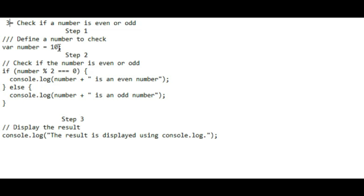The second step is to check if the number is even or odd. We use an if statement to check whether the number is even or odd. We use the modulus operator — this one here — to find the remainder when the number is divided by 2.